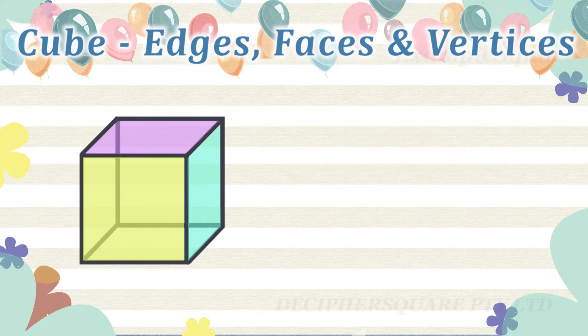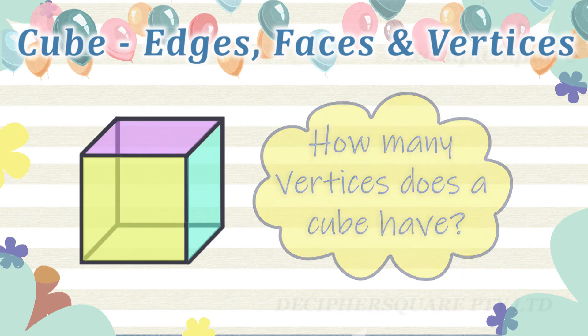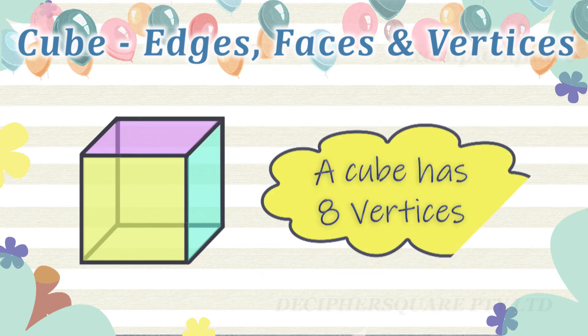How many corners or vertices does a cube have? A vertex or corner of a cube refers to a point where three edges meet. A cube has eight vertices or eight corners.